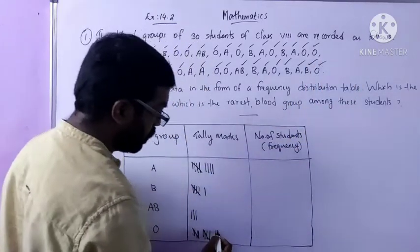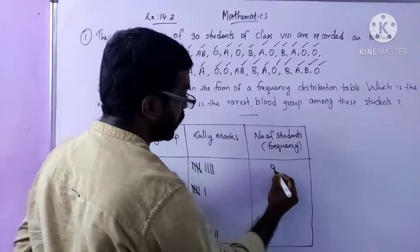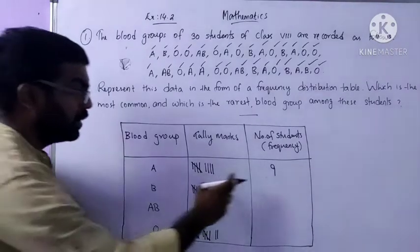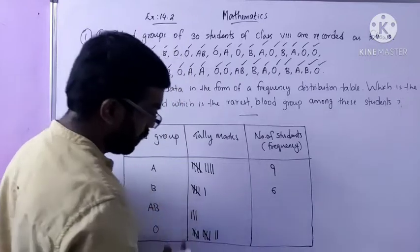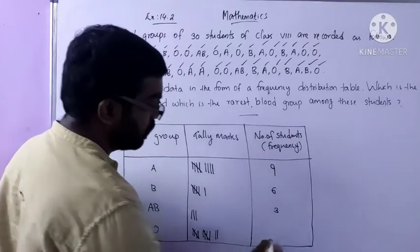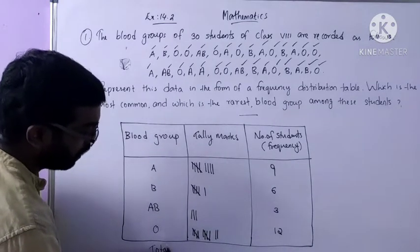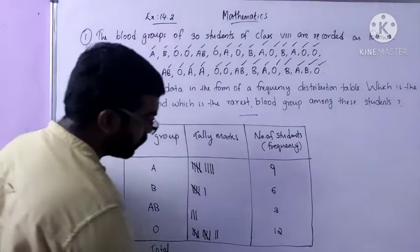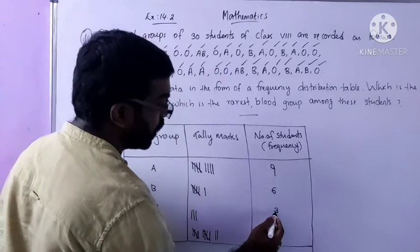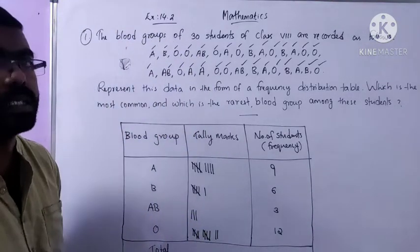Now we can count the tally marks. Blood group A: 5 plus 4 is 9 — that is the frequency. Blood group B: 5 plus 1 is 6. Blood group AB: 3. Blood group O: 5 plus 5 is 10, plus 2 is 12. In the last row we write the total: 9 plus 6 is 15, plus 3 is 18, plus 12 is 30. There are 30 students.